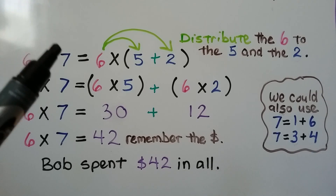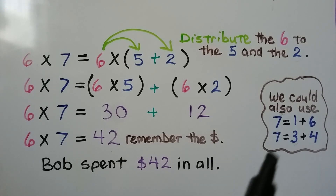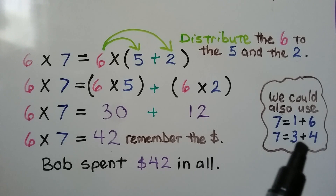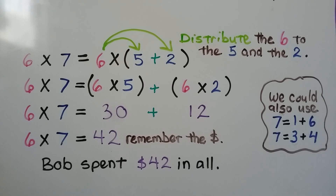We could have broken the 7 up into 1 plus 6, or 3 plus 4. And because we can add in any order, we could have used 6 plus 1 or 4 plus 3. We still would have had the same amount: $42.